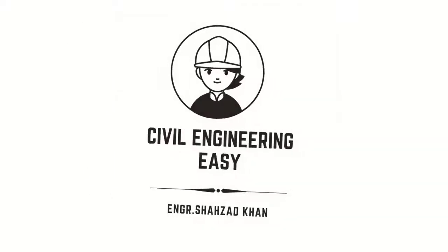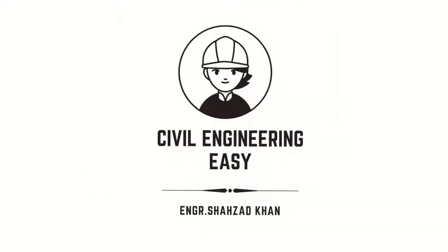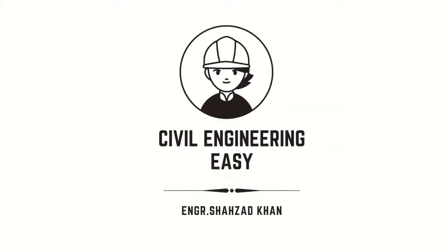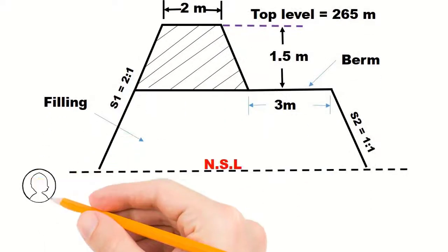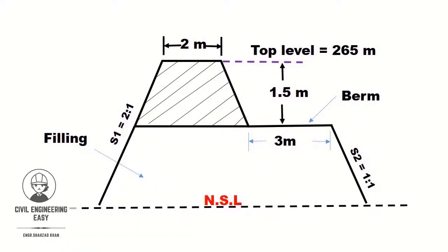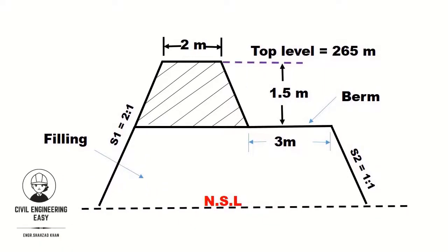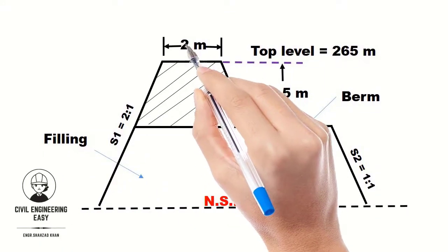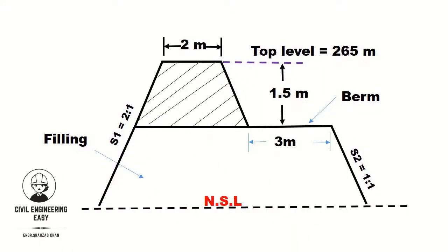Hi, welcome back to my YouTube channel Civil Engineering Easy. Today I will show you how to find out the quantity of earthwork for an embankment. The top width of this bank is 2 meters.